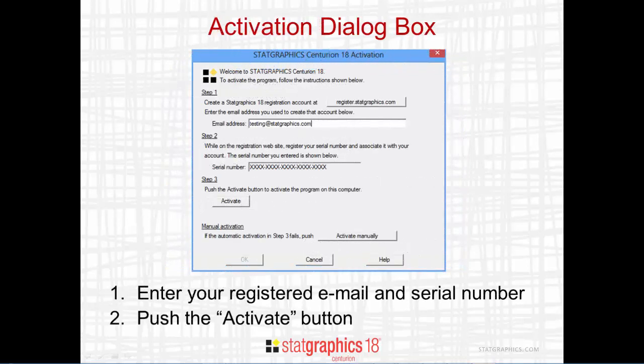The next dialog box is the activation dialog box. You need to enter the email address you registered during the registration process and the serial number you were given when you purchased the product. After you've done that, press the activate button shown under step three.